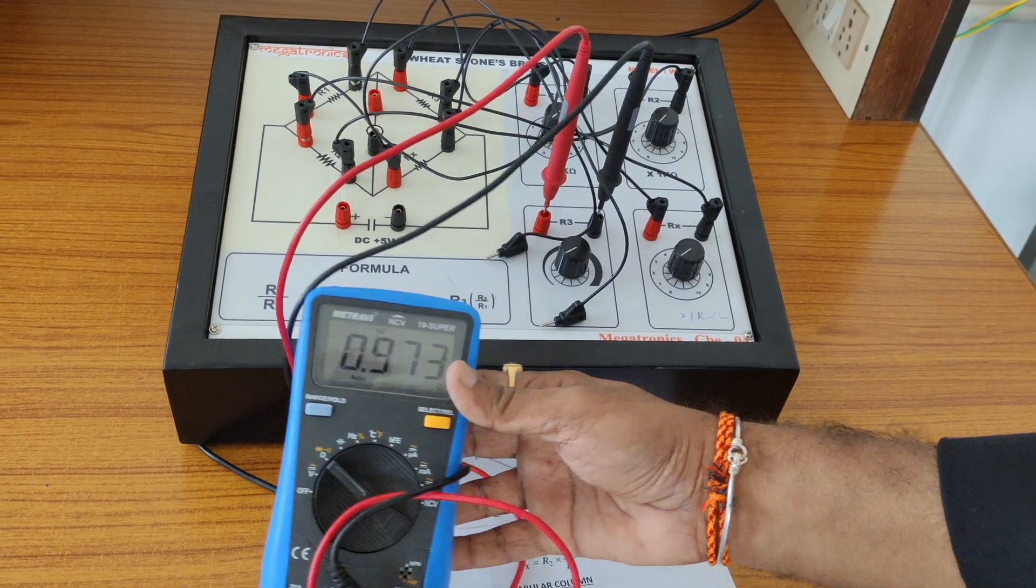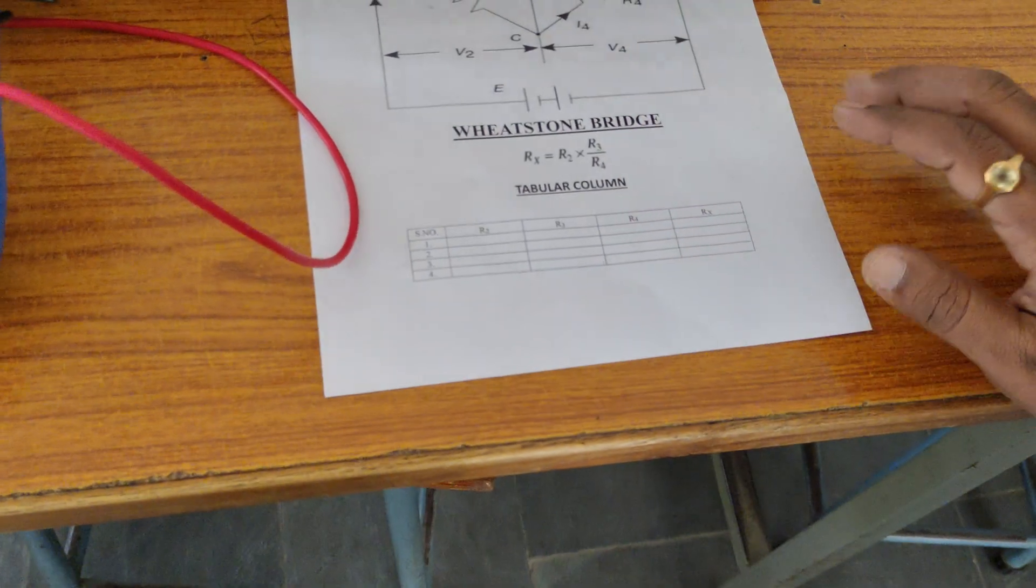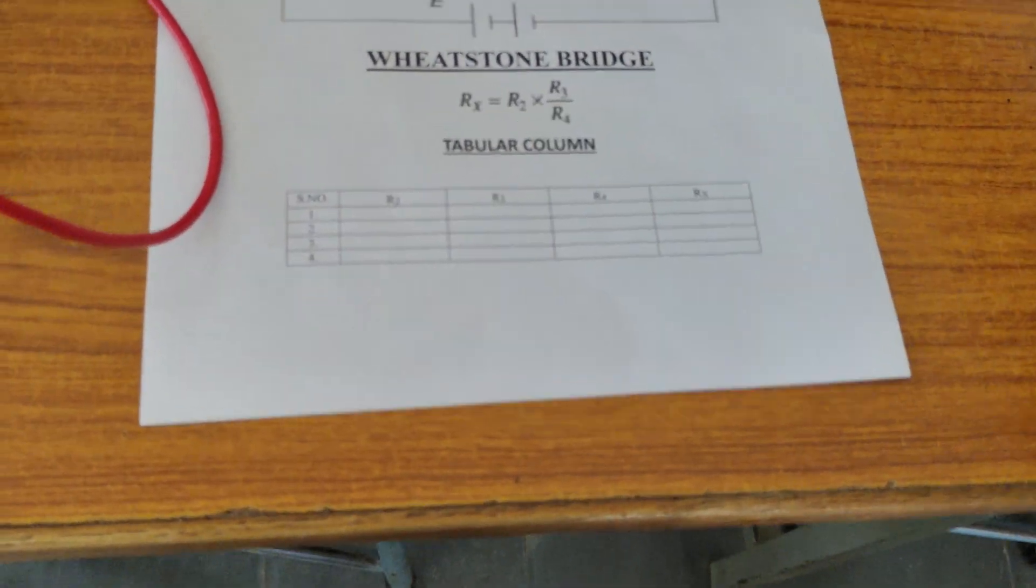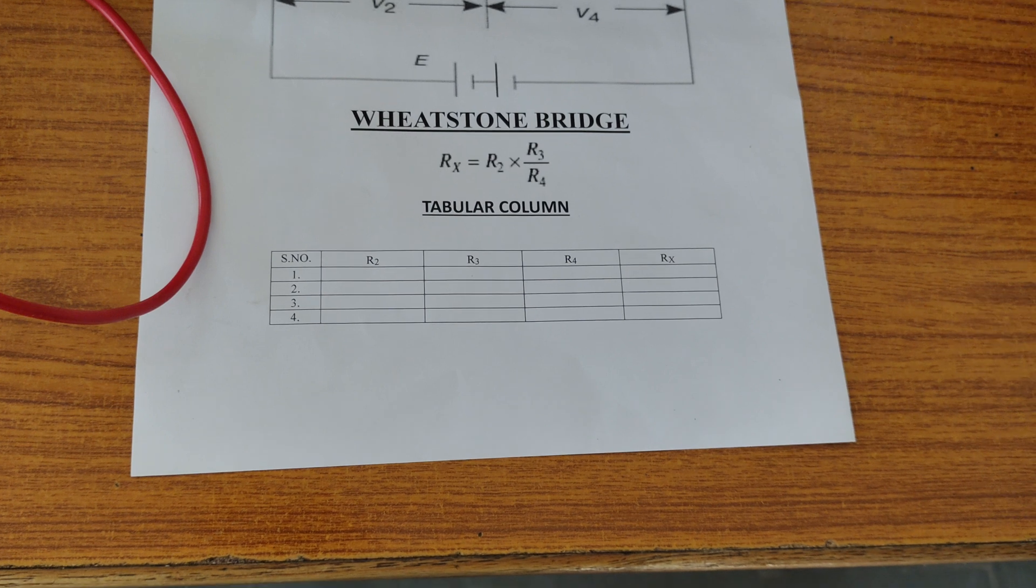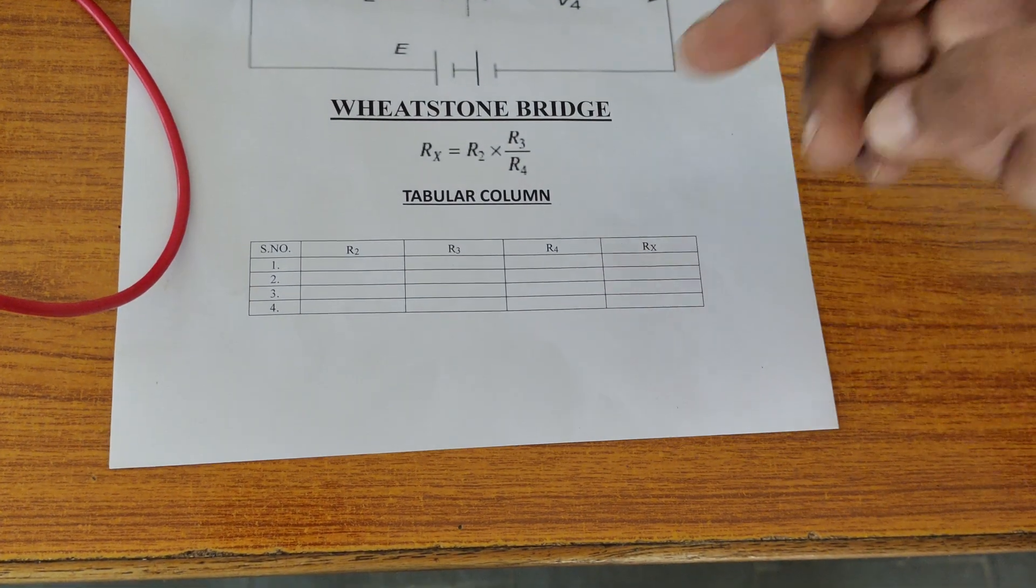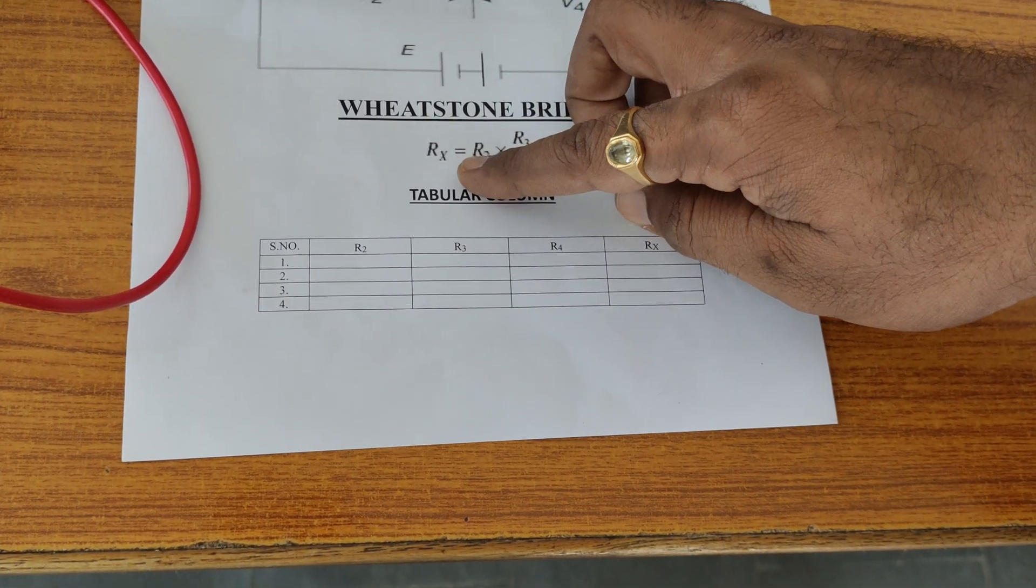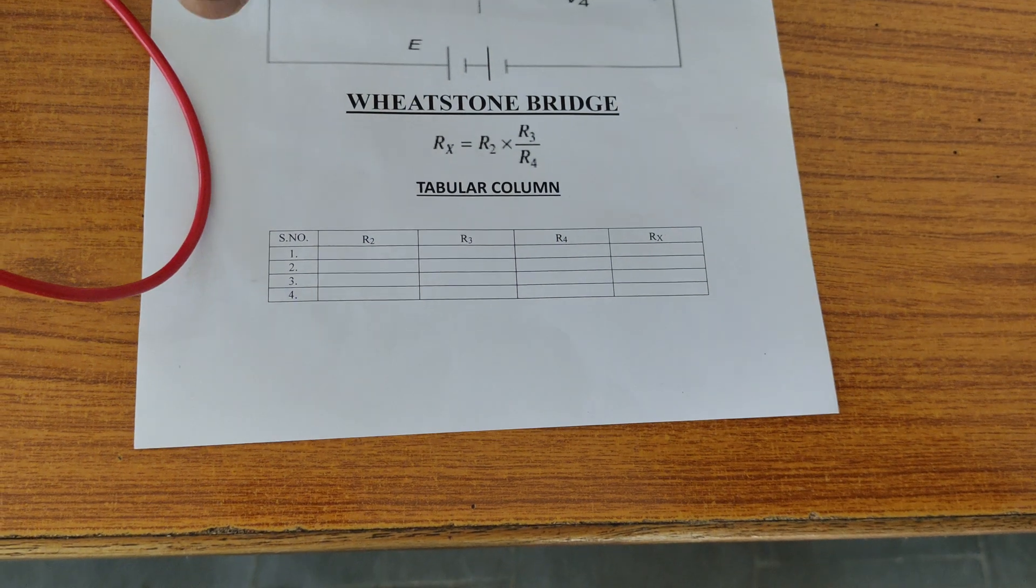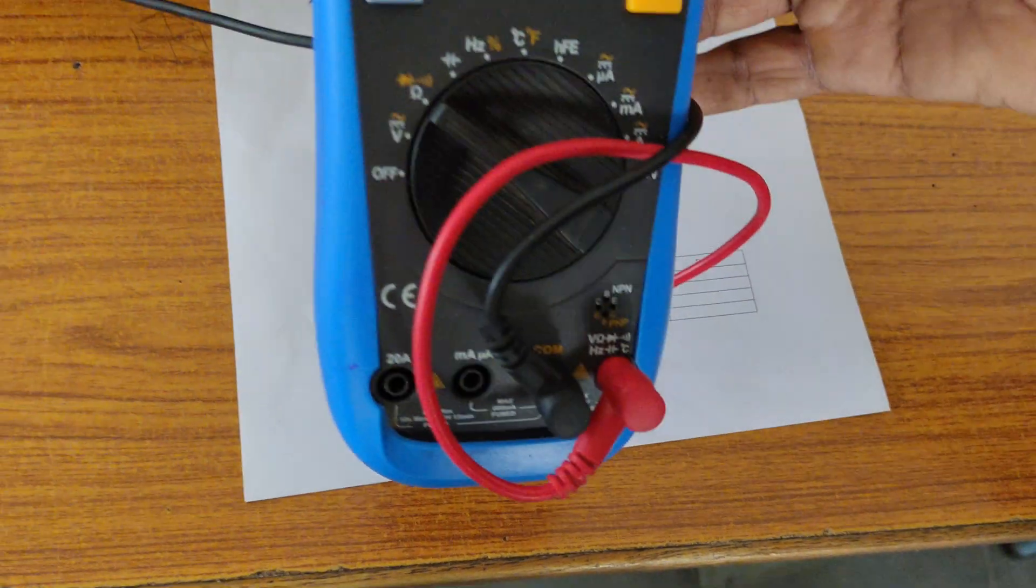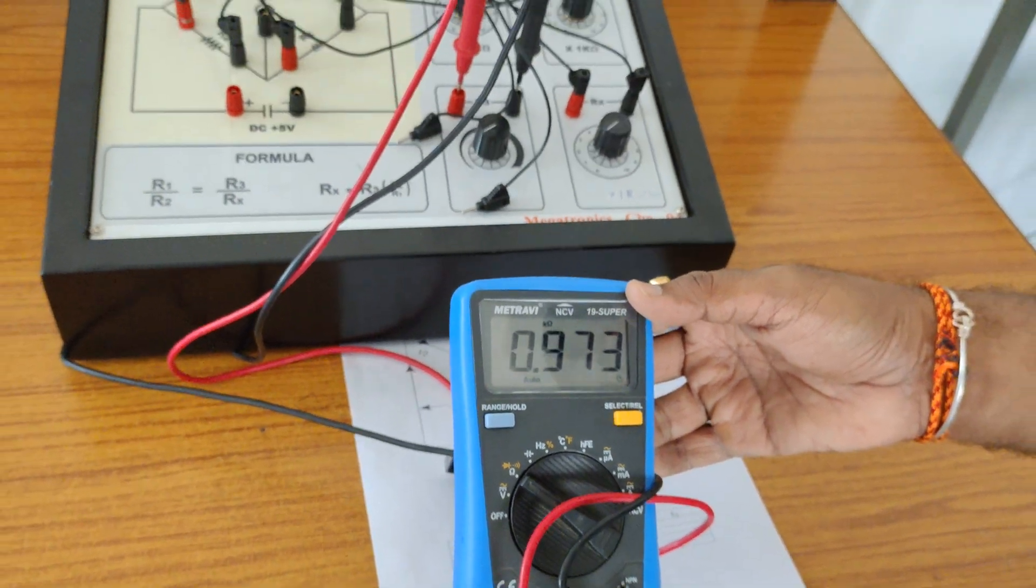How we can have this value here theoretically we can observe those values with the help of tabular column. I applied the values of R2 here is 1 kilo ohm and we are having R3 is also 1 kilo ohm and R4 is also 1 kilo ohm. The product of all those things is nothing but 1 kilo ohm. We can easily observe the unknown resistance here is 1 kilo ohm with the help of this multimeter reading. This is the multimeter reading: 0.973 is the practical value.